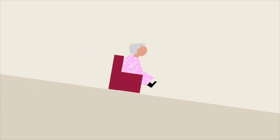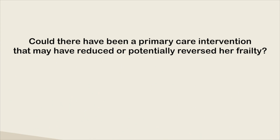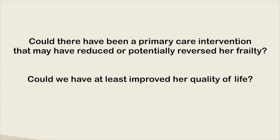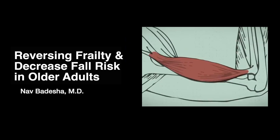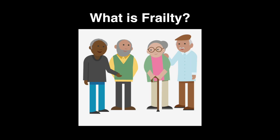No one is really happy with this outcome for Phyllis. Her son is upset and doesn't really understand how things declined so rapidly. Could there have been a primary care intervention that may have reduced or potentially reversed her frailty, or at least improved her quality of life in these later stages? Enter today's community lecture to reverse frailty and decrease fall risk through diet and strength training. Let's start with a brief background on the concept of frailty.